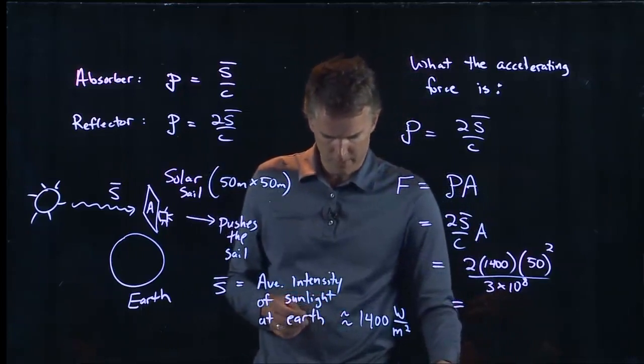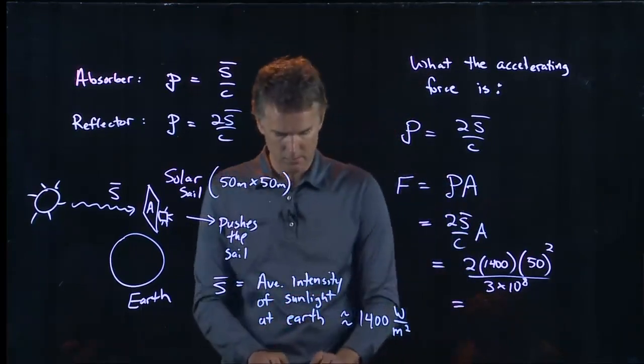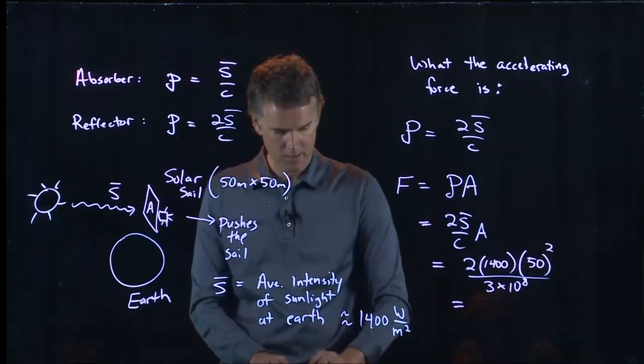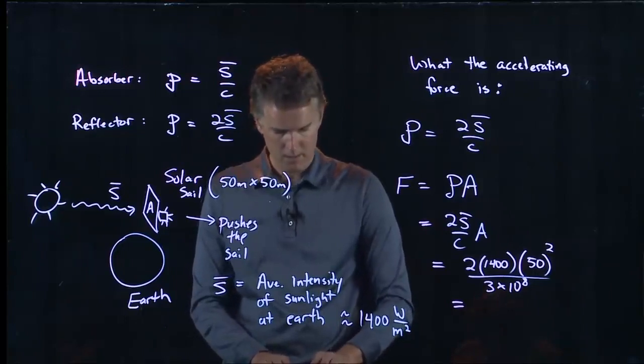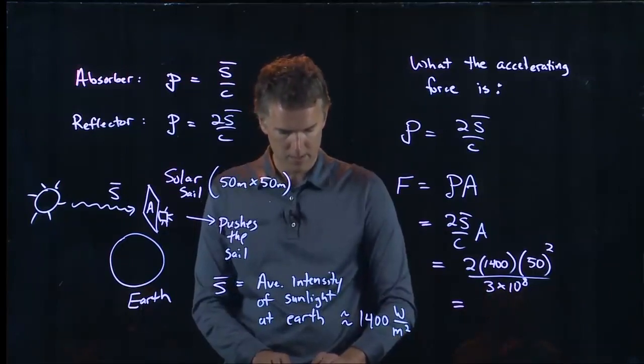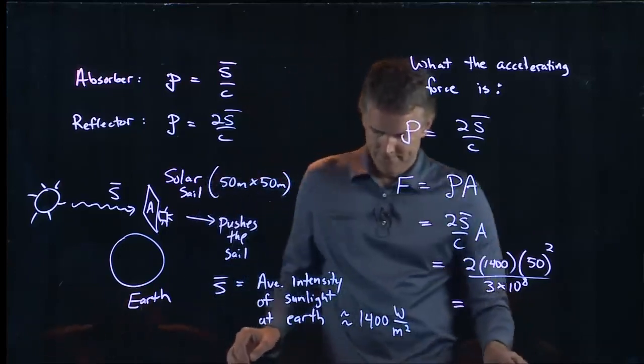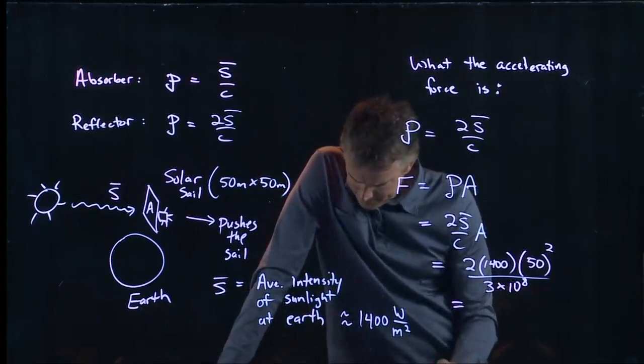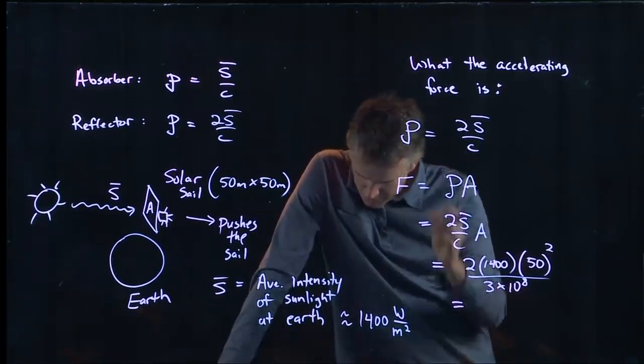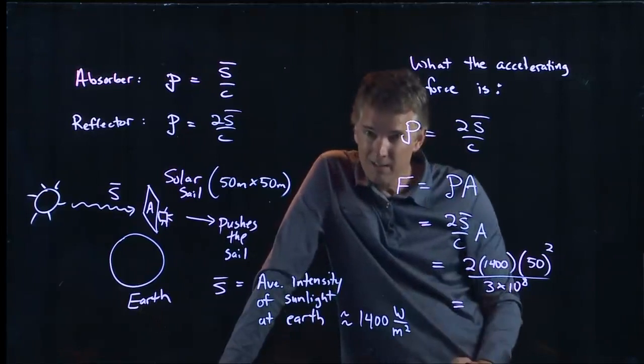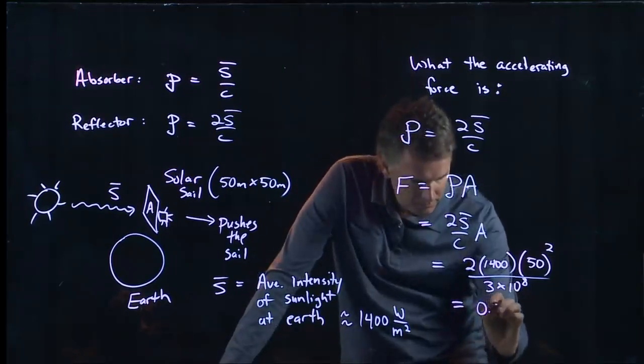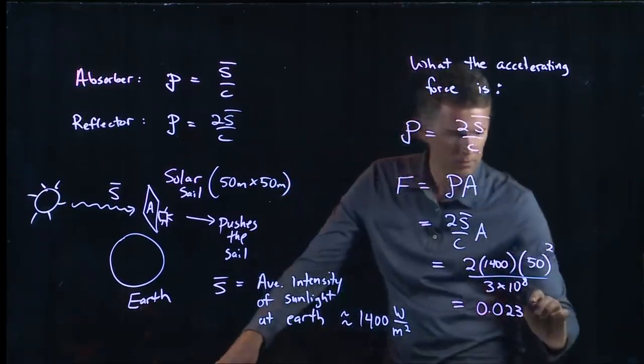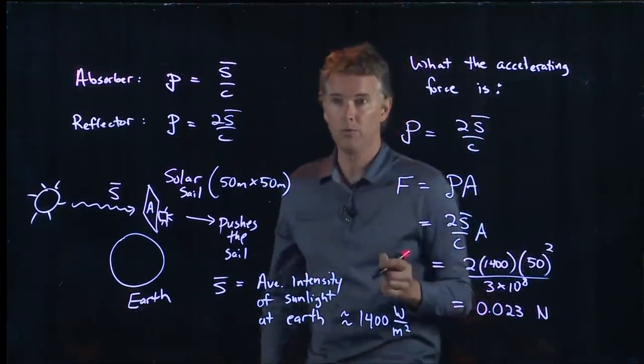I'll just let you guys do that. While you do that, I'll check Wolfram Alpha. If you're at home and you want to take a look, Wolfram Alpha is a great place to go. 2 times 1,400 times 50 squared all over 3 times 10 to the 8. And I got 0.023. Is that what you guys got? So 0.023. And that 3 continues, but that's fine. And the units are Newtons.